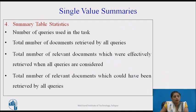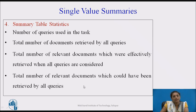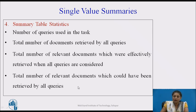We can also store statistics about the execution of a particular algorithm in a summary table. This includes: the number of queries used, the total number of documents retrieved, the total number of relevant documents effectively retrieved across all queries, and the total number of relevant documents that could have been retrieved. From this stored data we can analyze the results of that particular algorithm.